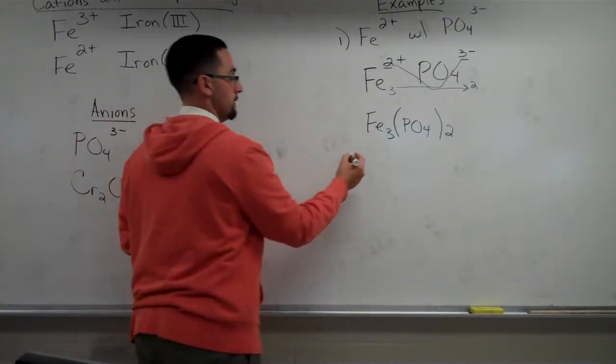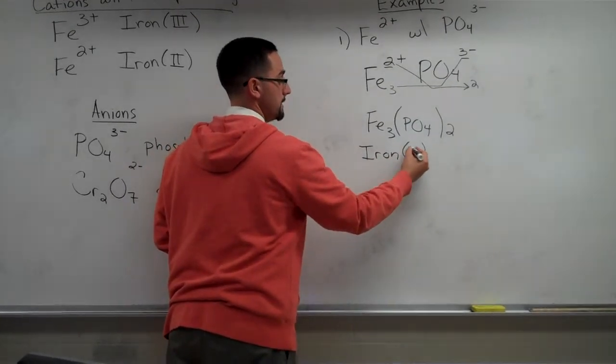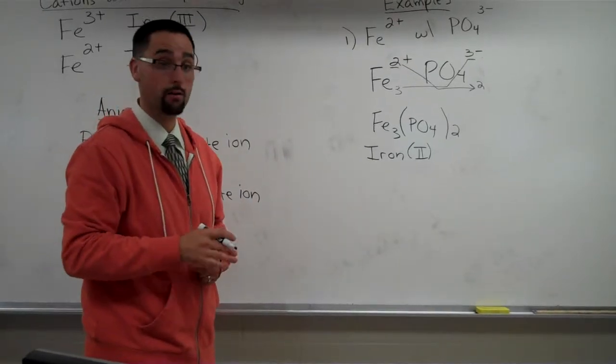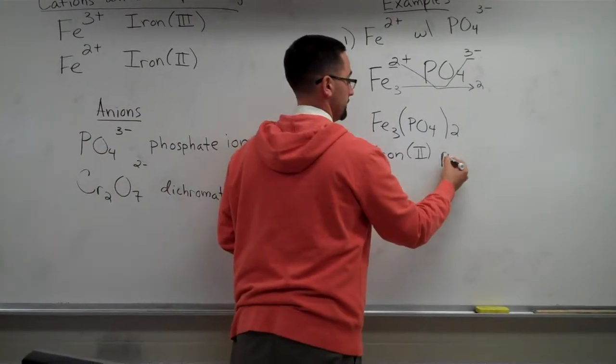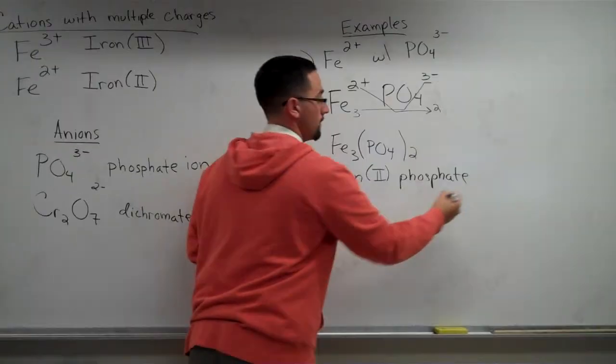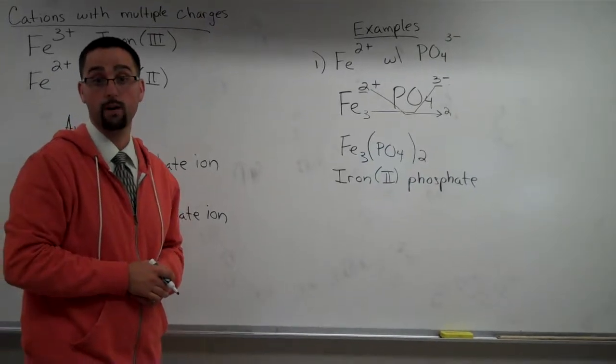The name of this would be called iron, parentheses, roman numeral 2, because we're dealing with iron 2, not iron 3, phosphate. And this is called the crisscross method when naming and writing formulas for ionic compounds.